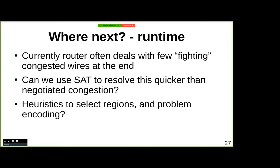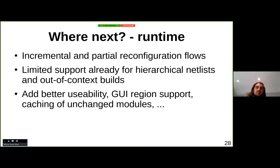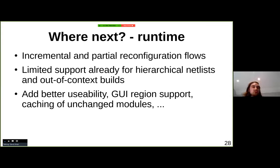NextPNR is not very good on incremental and partial reconfiguration support. There's some support in the core for things like regions and hierarchical netlists with out-of-context module builds, but usability isn't really there — no way to draw regions in the GUI, no caching of unchanged modules, no partial reconfiguration inputs and outputs. This is something I'd like to see in NextPNR, both for runtime improvements and for things the vendor tools can't easily do, like dynamically adding routing for debug.